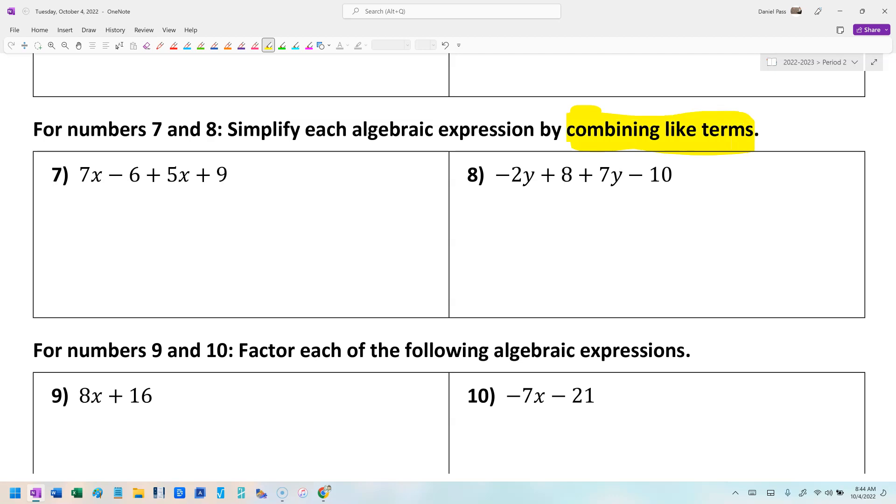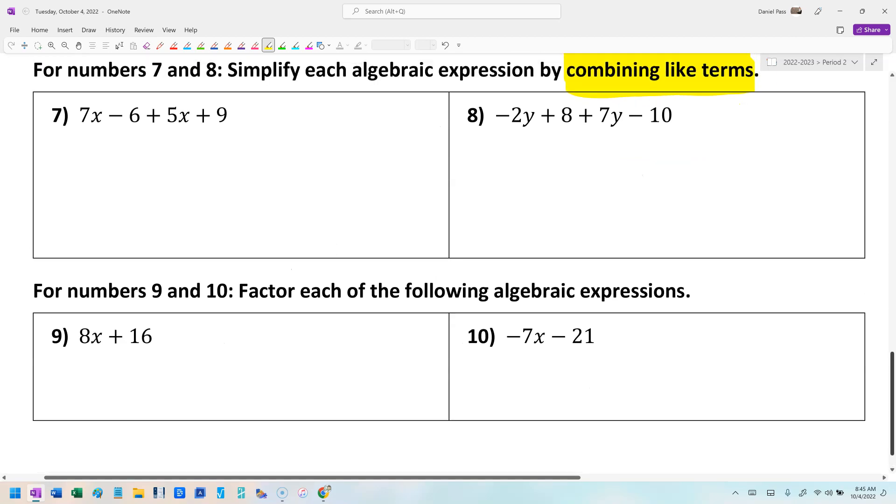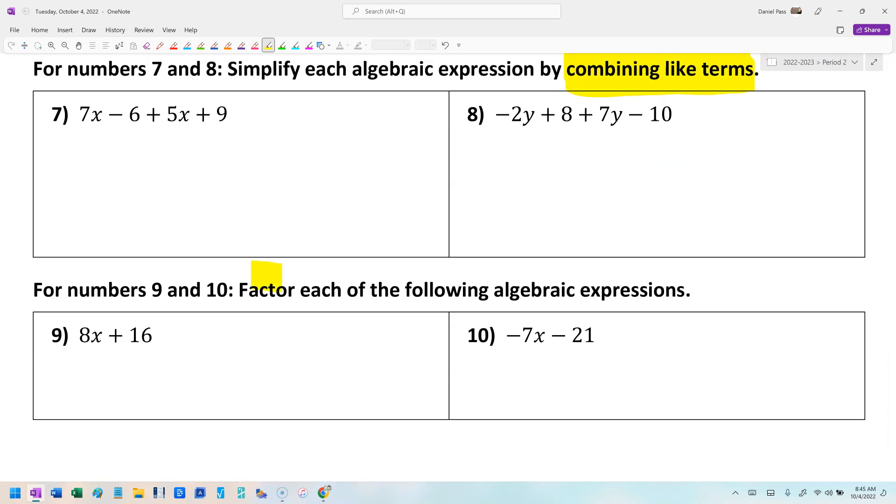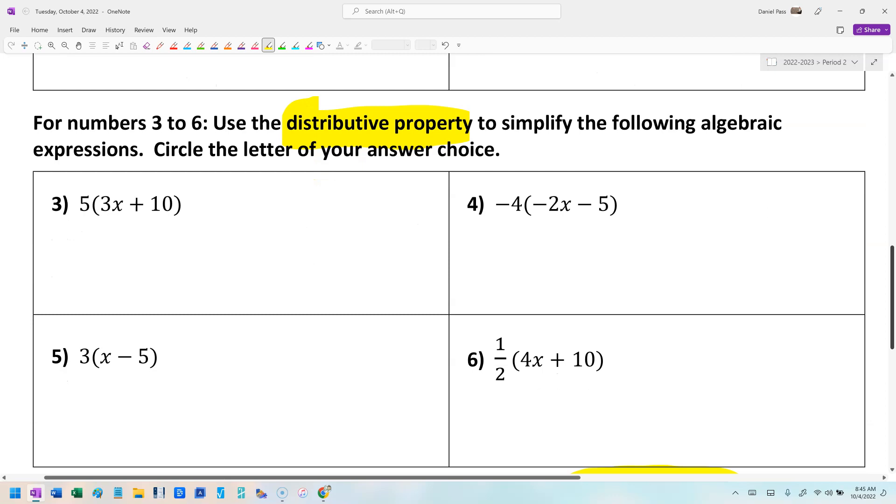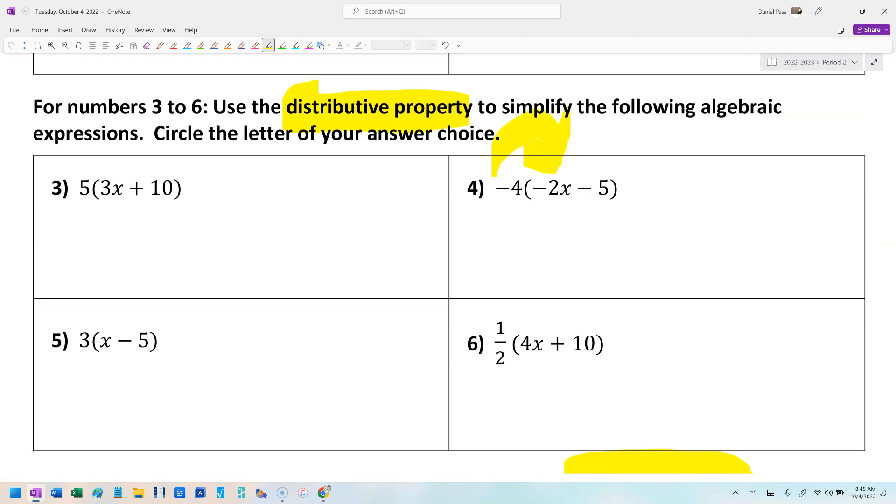Now, combining like terms. Do we use good guys, bad guys, or do we use Dorito man? Good guys, bad guys, because we're adding and subtracting these things. That's really important. So you might make yourself a huge note. Combining like terms is good guys, bad guys. It's using the scoreboard.